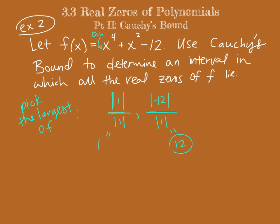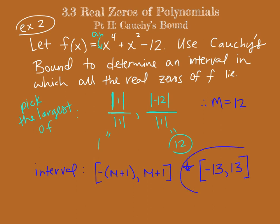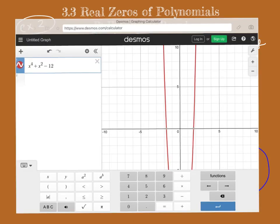So that means M is 12. And Cauchy's bound says that all of the real zeros of a polynomial lie in the interval from negative the quantity M plus 1 as the lower bound to positive the quantity M plus 1 as the upper bound. So in our case, if we do M plus 1, we'll get 13. So all of our real zeros lie between negative 13 and positive 13 on the x-axis.